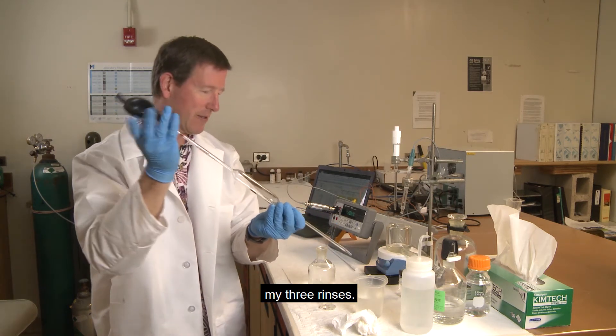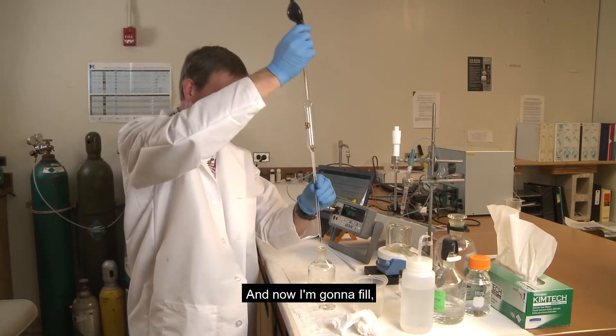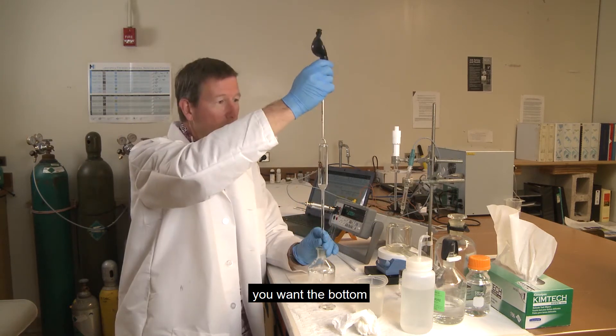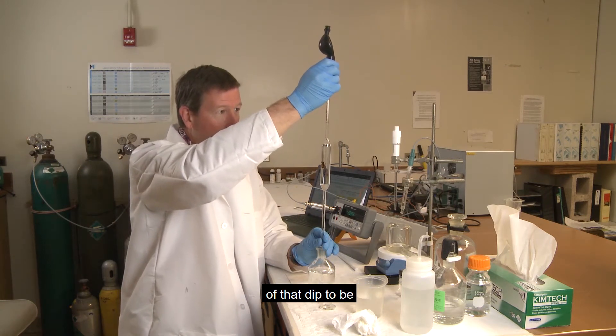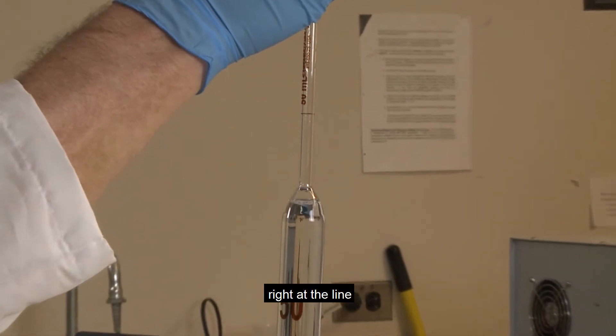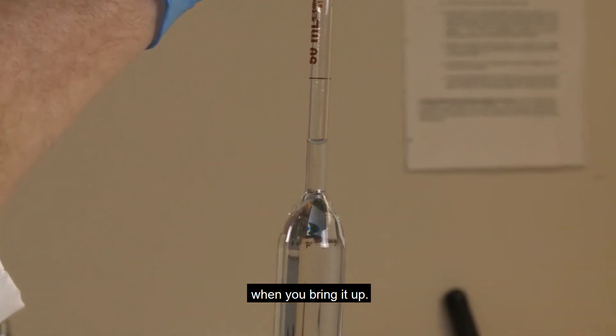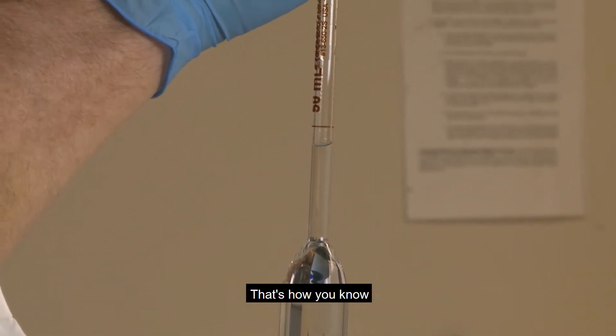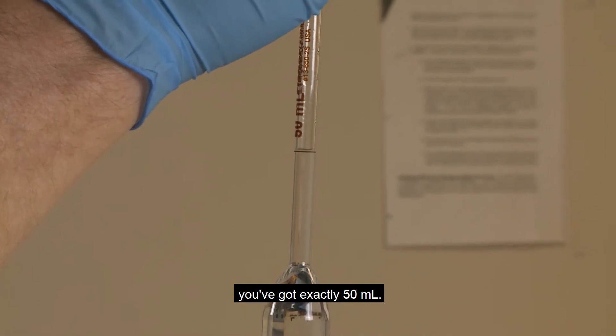So now I've done my three rinses and I'm going to fill. You want the bottom of that dip to be right at the line when you bring it up. That's how you know you've got exactly 50 milliliters.